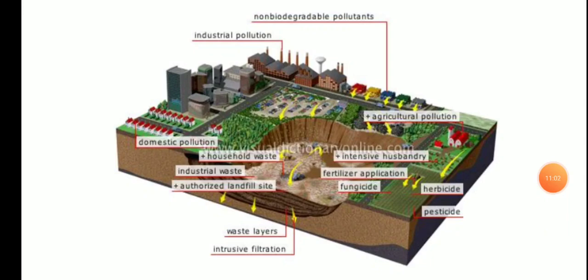This diagram shows soil pollution and its different types of causes. On the right-hand side: herbicides, pesticides, and fungicides — these are all agricultural practices, known as agricultural pollution. Domestic pollution comes from household waste, industrial waste, and unauthorized landfill sites. Industrial pollution is due to non-biodegradable pollutants, as industries release harmful chemical substances into the soil — and sometimes into water as well.